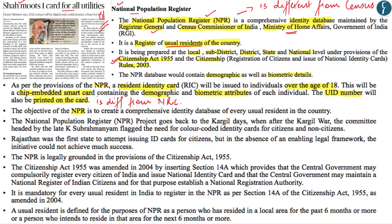As far as historical background is concerned, the NPR project goes back to the Kargil days — at that time there was nothing like Aadhaar. After the Kargil War, a committee headed by late K.C. Subrahmanyam recommended the need for color-coded identity cards for citizens as well as non-citizens. Though Rajasthan was the first state to attempt issuing ID cards for citizens, at that time there was no enabling legal framework and the initiative could not be taken forward. The NPR is legally grounded in the Citizenship Act of 1955, which was amended in 2004 with a new section — Section 14A — inserted.